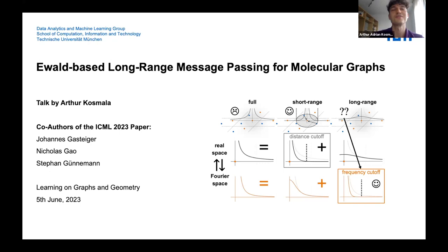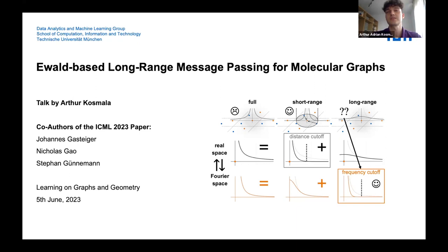For context, this was part of my thesis work in Stefan Gündemann's group. Stefan's group works mostly on reliable machine learning methods on graph-structured data as well as temporal data. This includes things like robustness and uncertainty estimation, but we also do applications to the natural sciences, such as this one. I myself, being a theoretical physicist by background, really enjoy doing things at this melting pot of many different disciplines.